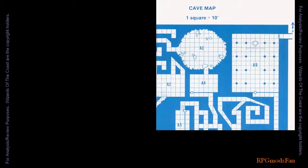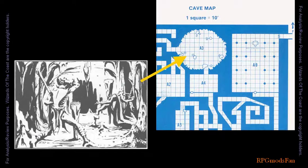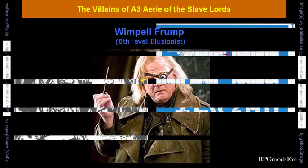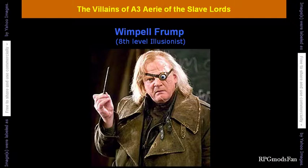After the salt slide chamber, the party will need to pass through an octagonal-shaped cavern filled with piercers, with a false door located on the opposite end. One of the villains of the module is Wimple Fromp. Wimple Fromp is described as a lackluster 8th level illusionist, and as a wizened old man in tattered clothing. He has been hired by the slave lords to guard an entrance to their city.